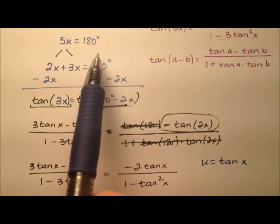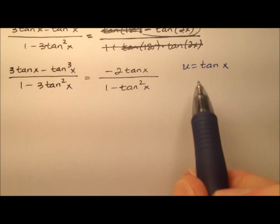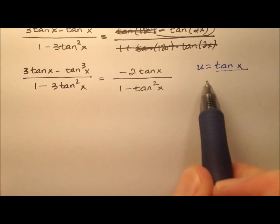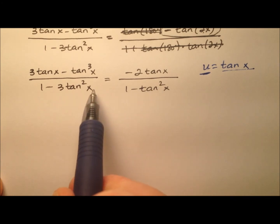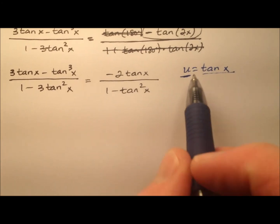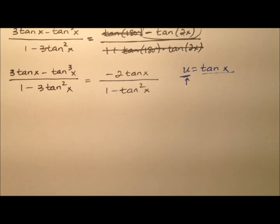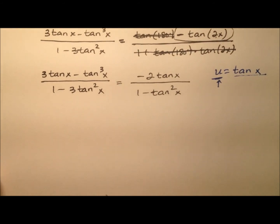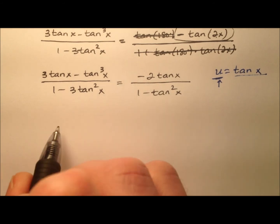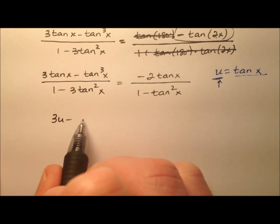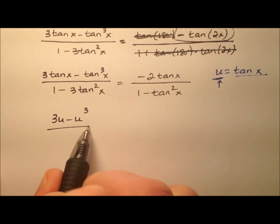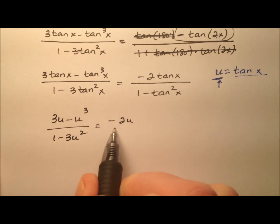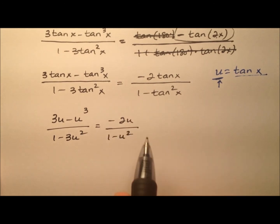So we're going to say u equals the tangent of x. So remember back from the beginning, x was 36 degrees. So my u is the tangent of 36 degrees. So once I change everything in terms of u and write my polynomial equation, when I solve for u, I'll actually be solving for the tangent of 36 degrees. So let's make that transition. So we will have 3u minus u cubed all over 1 minus 3u squared equals negative 2u over 1 minus u squared.